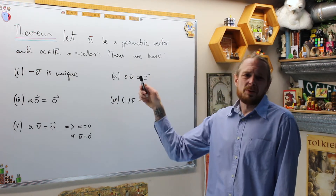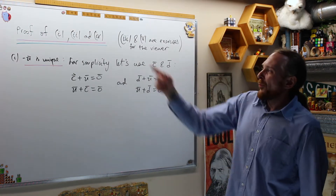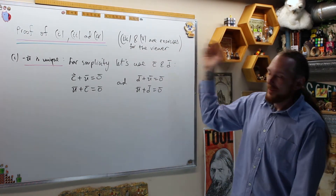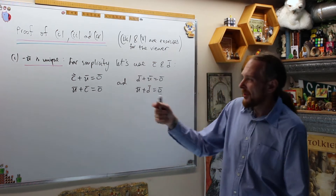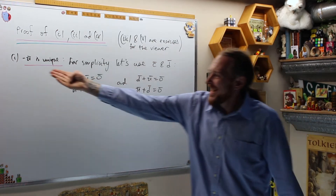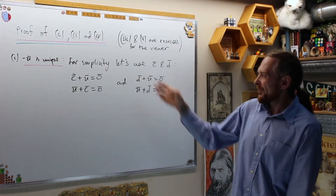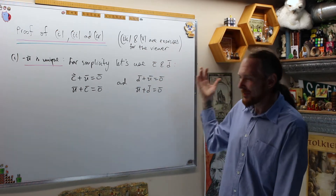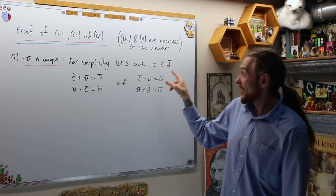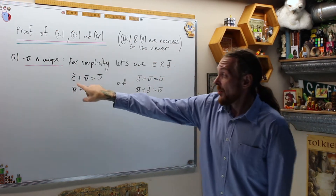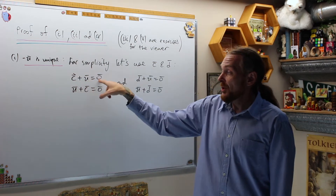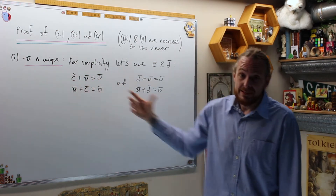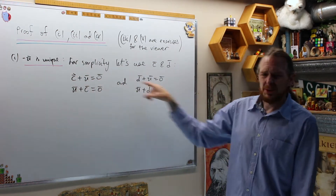Let's prove a couple of these properties. We're going to prove one, two, and four. We're going to leave three and five for the viewer as an exercise. For the first one, the negative U is unique. For simplicity I'm going to use C and D so I don't have to index. But the real axiom says if you have two inverses additively, we would have that the inverse plus U gives us zero and U plus that inverse gives us zero. Suppose we have two of them.